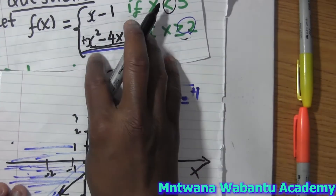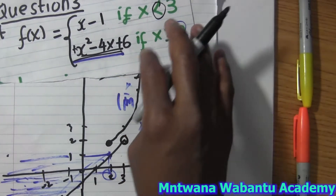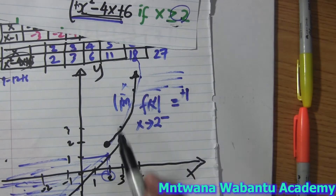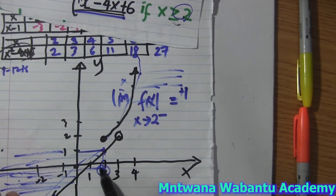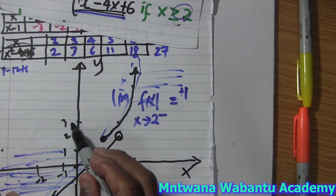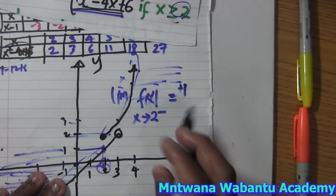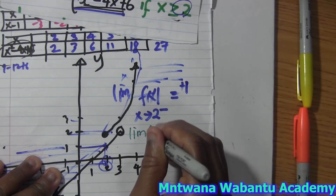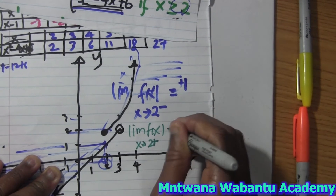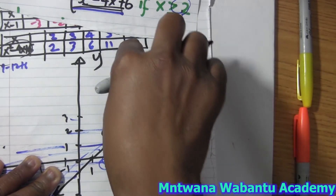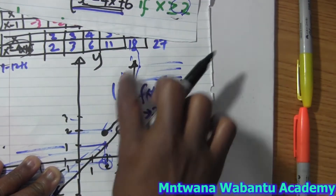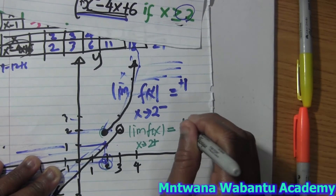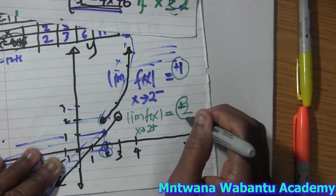But if I come from the right, the graph I'm going to touch first is the quadratic piece, because the linear piece stops at x = 2 (open point). So when x approaches 2 from the right, I read the value on the quadratic graph, which is y equal to 2. So the limit from the right equals 2. Therefore the limit from the right is not equal to the limit from the left.